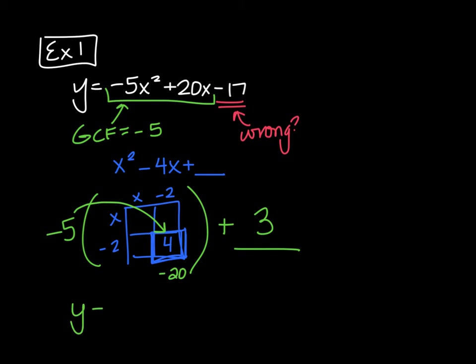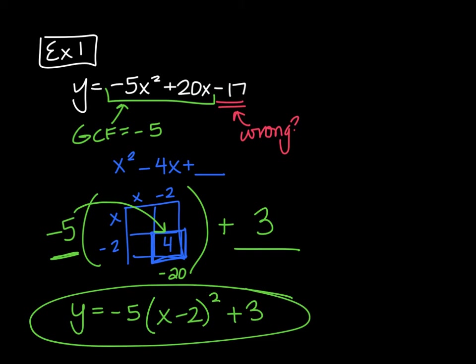And so then to rewrite my final equation, my final answer is going to be y equals negative 5 from the GCF, the box, or however you worked that out, x minus 2 squared, and then plus 3. And this is just the vertex form of my original equation.